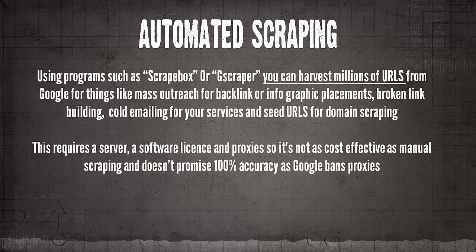Automated scraping is simply using programs such as ScrapeBox or G-Scraper to harvest thousands — up to millions — of URLs a second, depending on how many proxies you have from Google. Use cases include mass outreach for backlink or infographic placements, guest post placements, broken link building, cold emailing for your services — you can find business contact information with the kind of footprints we'll go over later. You can also find seed URLs to then scrape for expired domains.